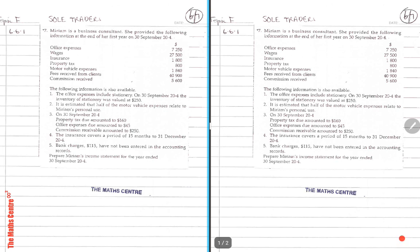Number one: office expenses include stationery. On 30th September 2064, inventory of stationery was valued at $250. What they are telling you is that from the office expenses there is unused stationery, so you have to take that out and that $250 will be capitalized as your current asset. It is estimated half of the motor vehicle expenses relate to Miriam's personal use. So this figure here, $1,840, you have to divide by two. Only half of it will be taken, the other half is actually drawings.